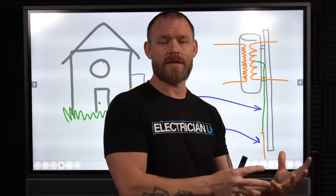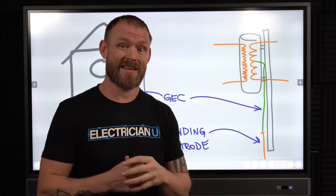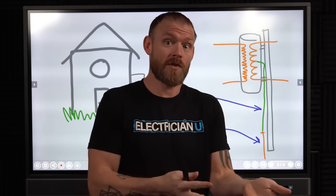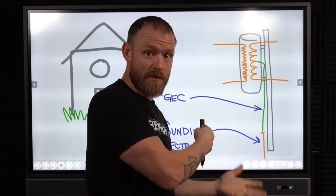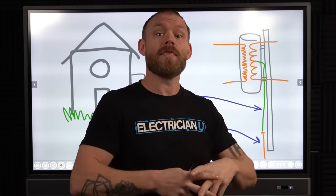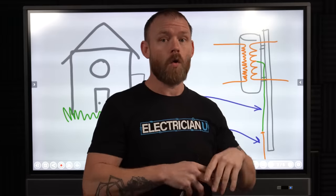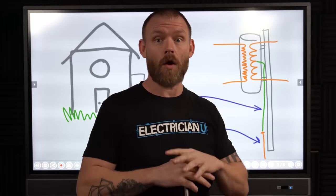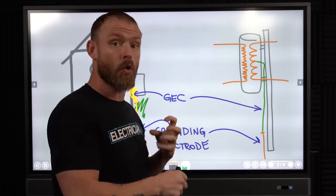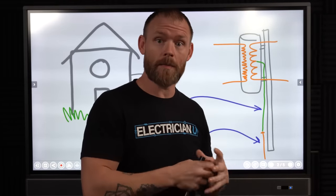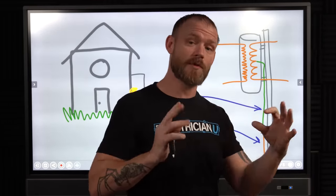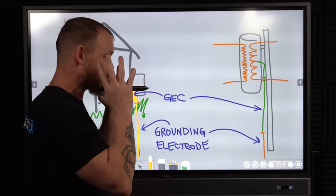Grounding electrodes were not always installed. In old school wiring systems it was just a hot and neutral — there was no ground as a reference to earth, and the systems worked just fine. With clearing faults, it's a completely different thing. Equipment grounding conductors and bonding conductors are what are actually used to trip breakers. So keep those things separate in your mind.